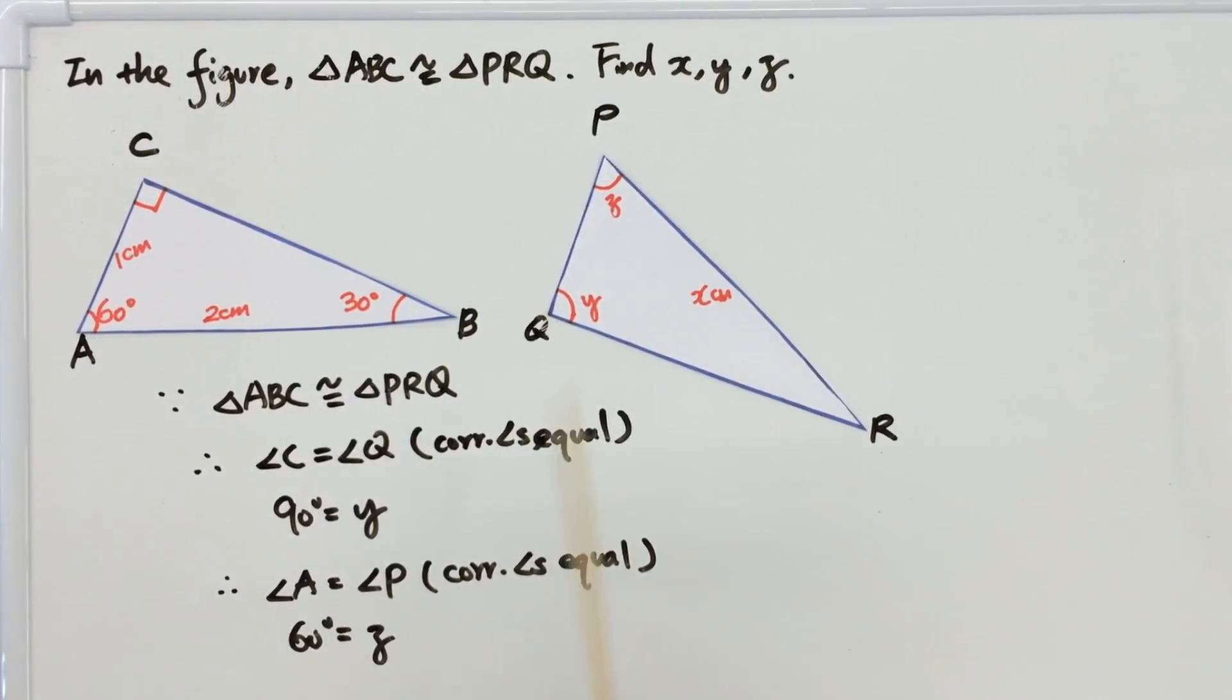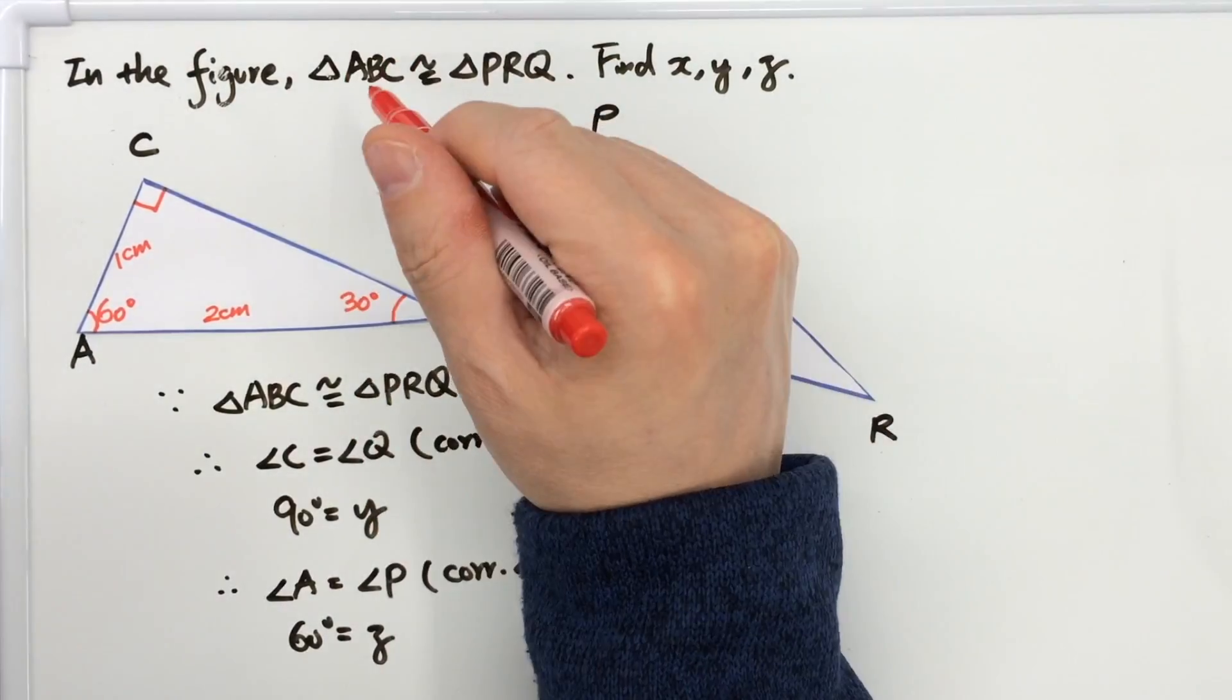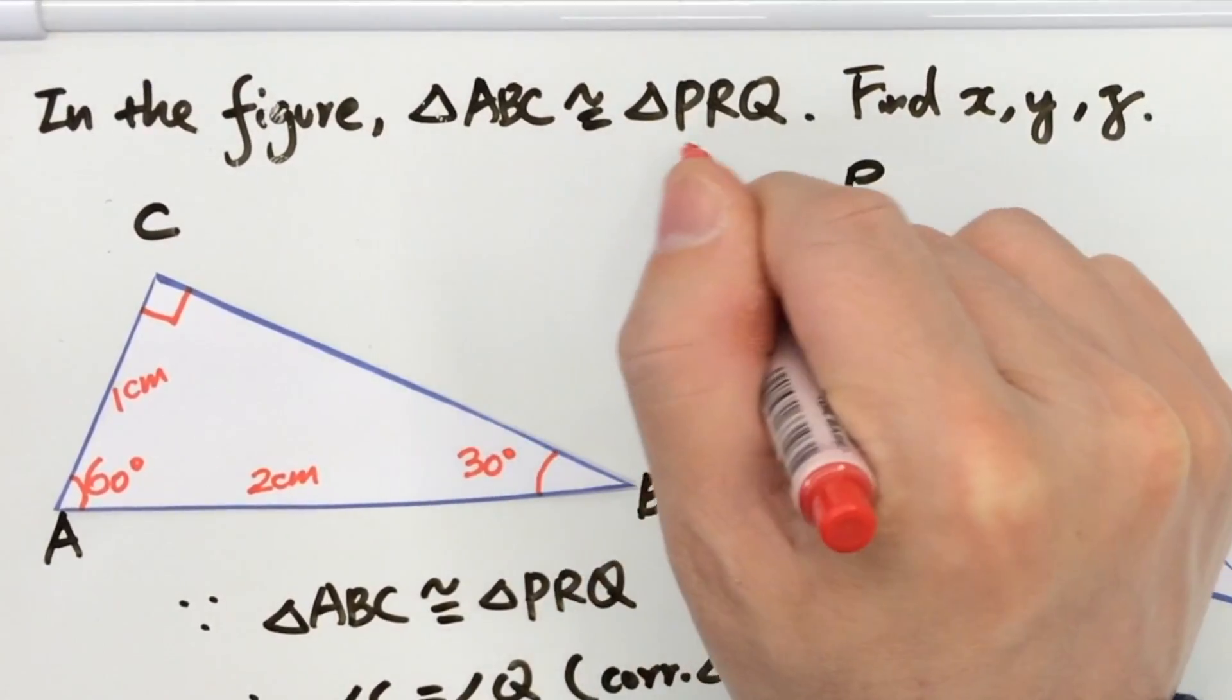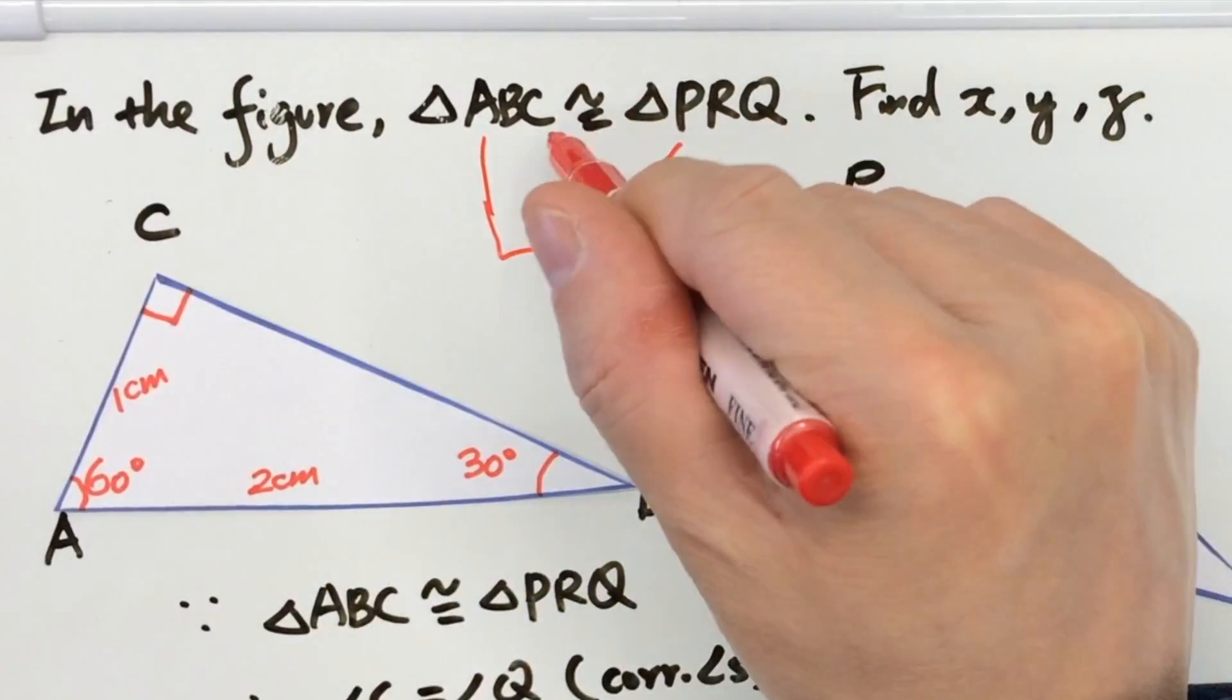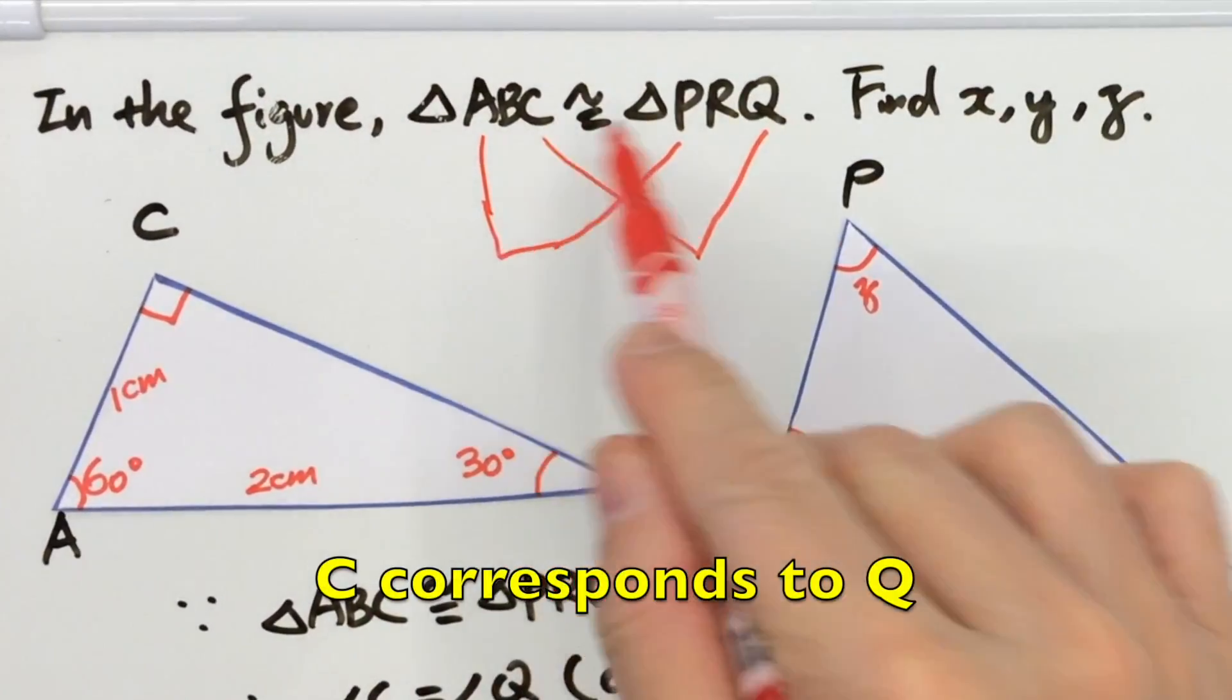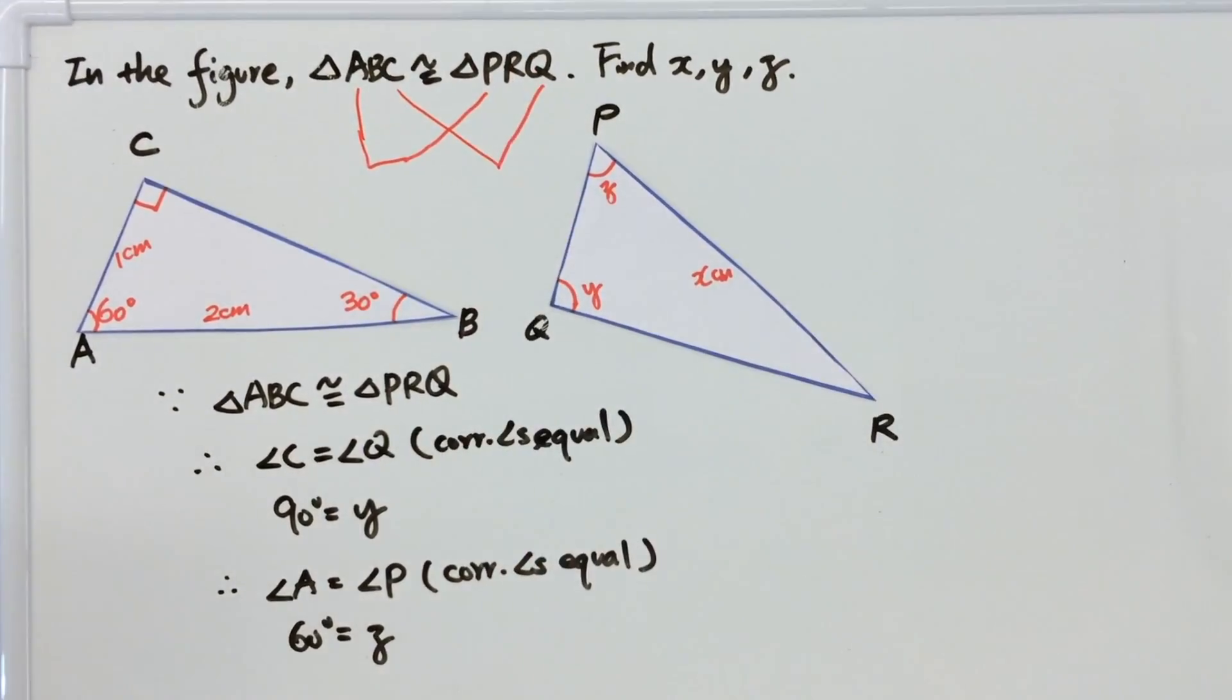And sometimes if we find difficulty in doing the translation or reflection, we can do it in another way. Say, if the given condition is triangle ABC is congruent to triangle PRQ, that means A and P will be corresponding angles of each other. And angle C and angle Q will be always equal to each other because they are corresponding angles. Therefore, y will equal to 90 degrees. We can just look at the corresponding angles from the given condition.